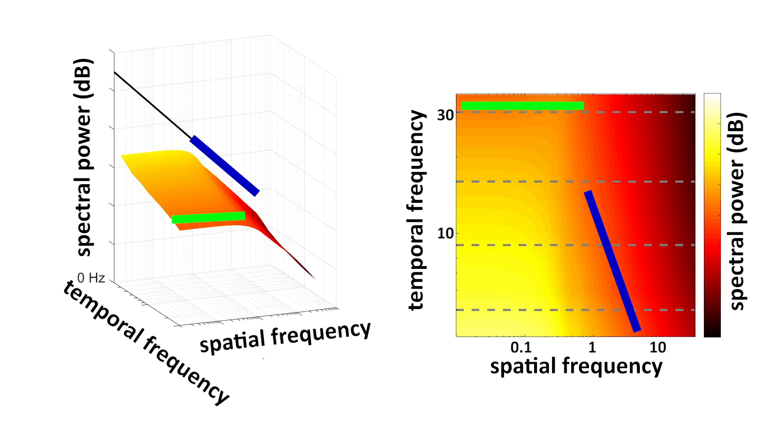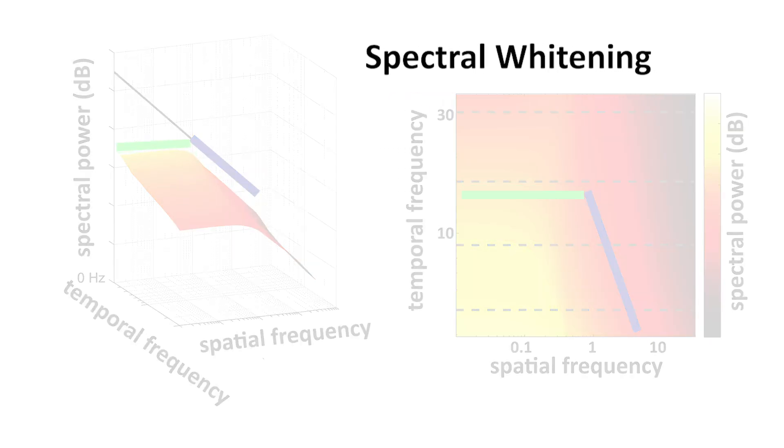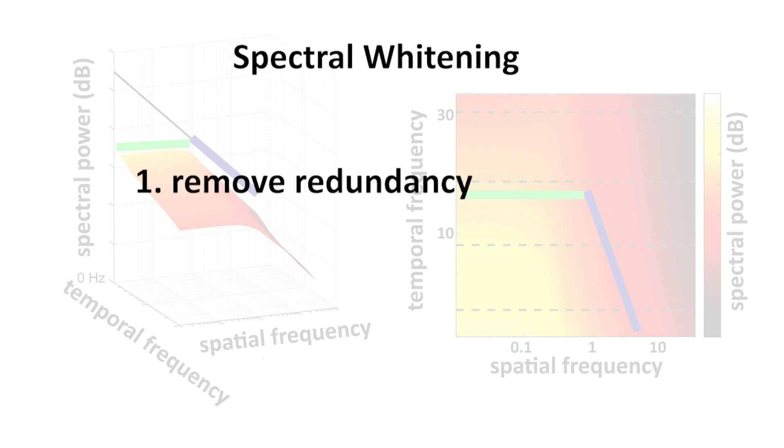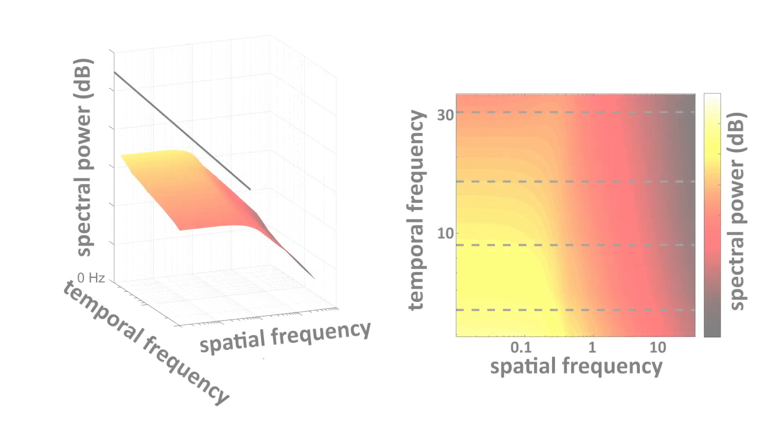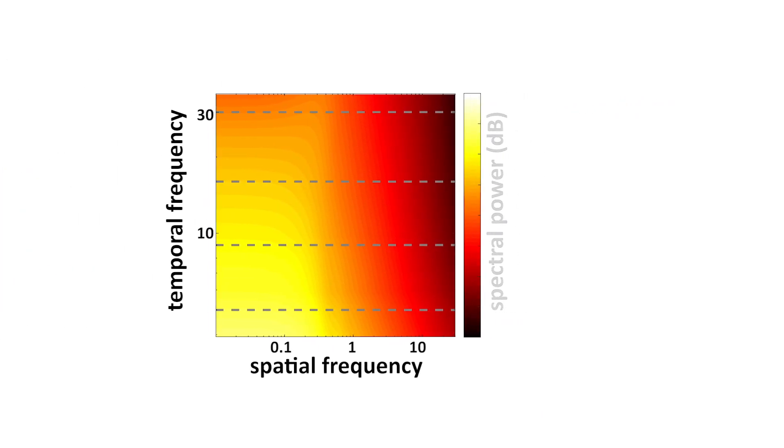This equalization of power across spatial frequencies is a phenomenon known as spectral whitening. It is a standard technique in communication and signal processing to remove redundancy in signals and improve the efficiency of data transfer.